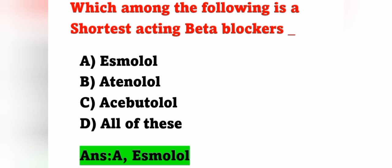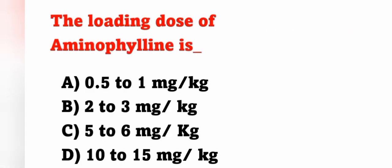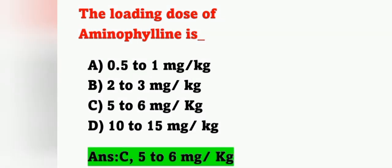Next question: the loading dose of aminophylline is — option A: 0.5 to 1 mg/kg, option B: 2 to 3 mg/kg, option C: 5 to 6 mg/kg, option D: 10 to 15 mg/kg. Aminophylline is an example of bronchodilators. Its loading dose is 5 to 6 mg/kg, so option C is the correct answer.